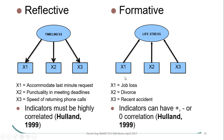Whereas looking at formative measures, you have indicator variables that contribute to a latent variable of life stress. If you take out one of the indicator variables — job loss, divorce, or recent accident — it doesn't really add to the life stress if you remove one. Therefore, this latent variable life stress would be less complete, and the formative indicators can have positive, negative, or zero correlation with each other.